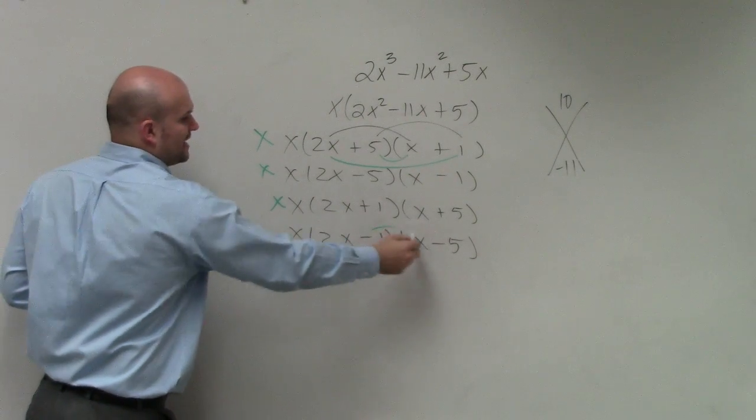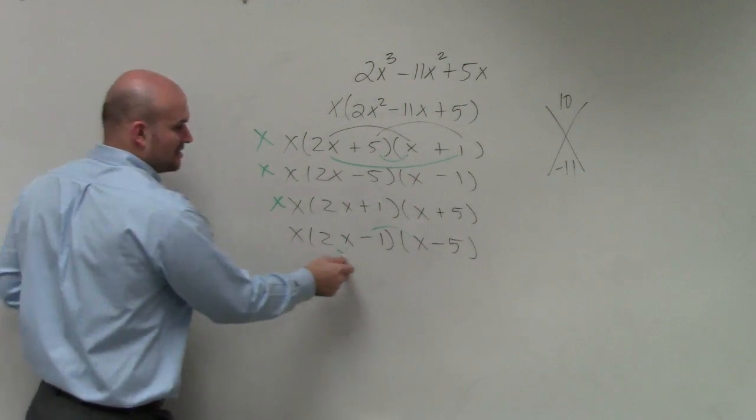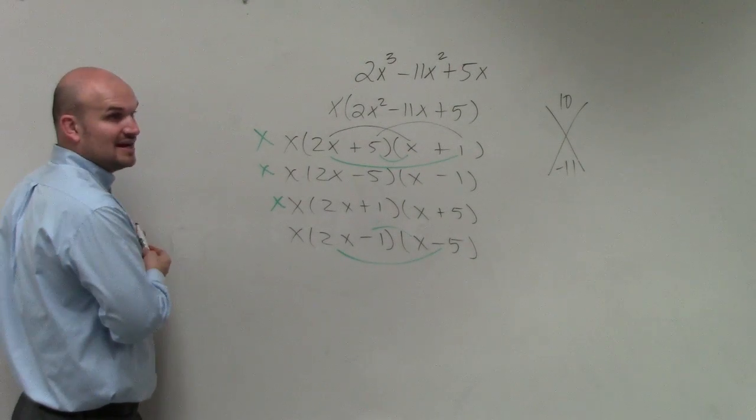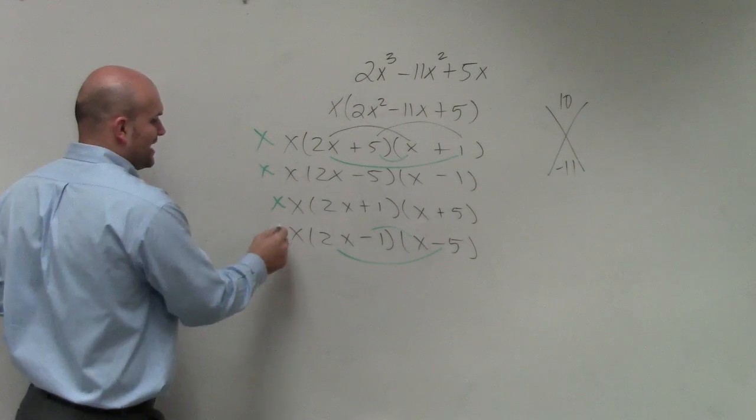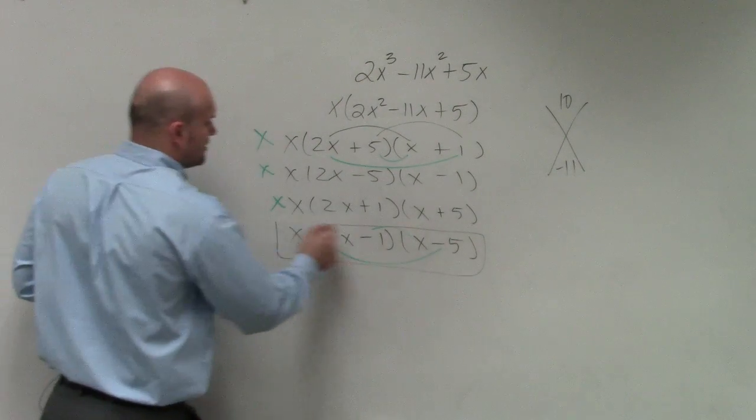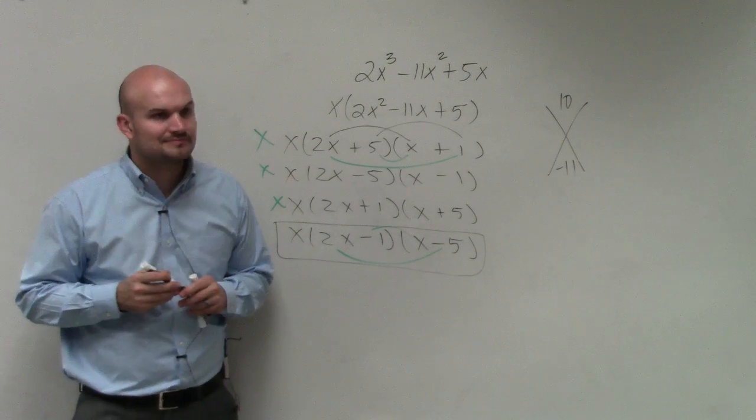See if this one works. Negative 1 times x is negative 1x. 2x times negative 5 is negative 10x. Negative 10x plus negative 1x is negative 11x. So that is your factored form completely over real numbers. OK?